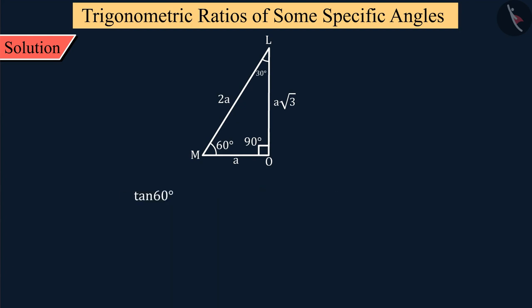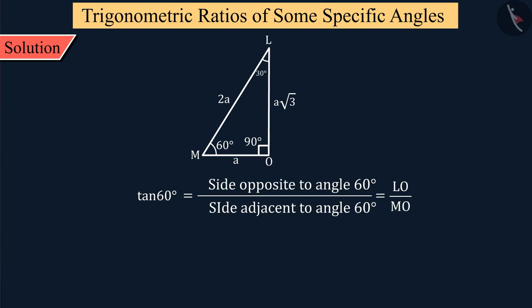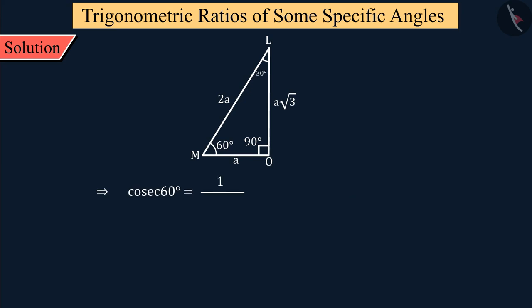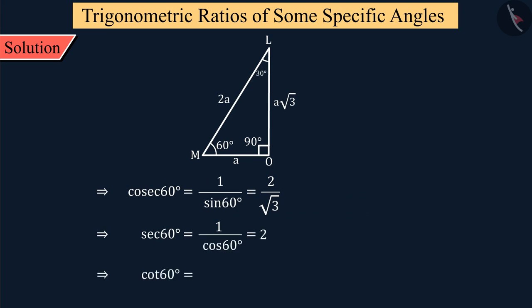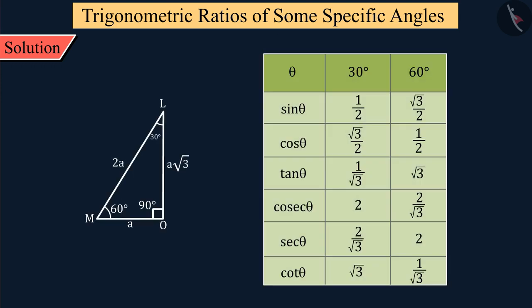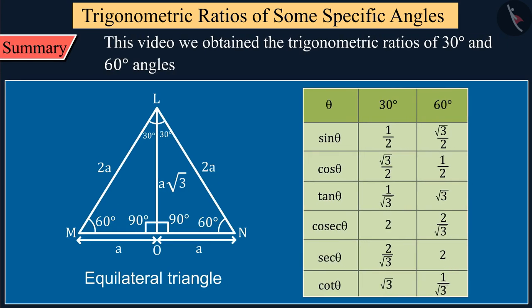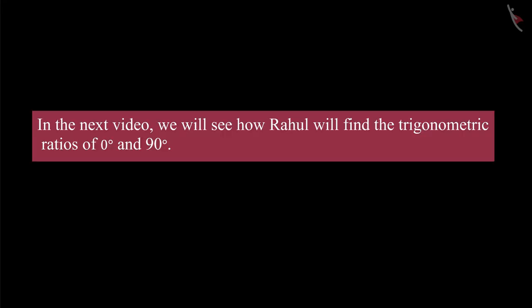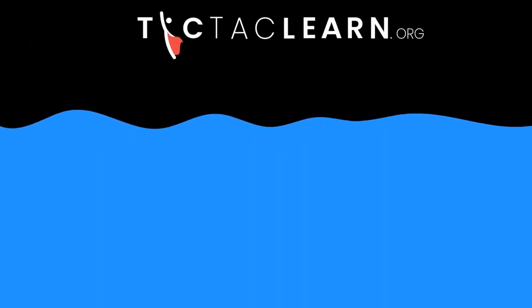All these values are represented in the following table. Today in this video, we obtained the trigonometric ratios of 30 degree and 60 degree angles. In the next video, we will see how Rahul will find the trigonometric ratios of 0 degree and 90 degree. We'll see you next time.